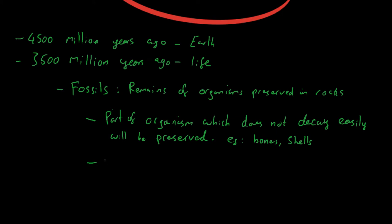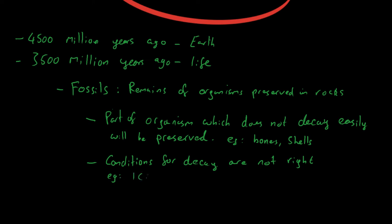Another reason for a fossil forming could be that there are conditions which cause decay to be really slow or not happen at all. Decay occurs in warm, moist conditions. If you have an organism frozen in ice, then those conditions are not warm or moist, so it's going to take way, way longer for an organism to decay, or it just won't decay at all. Examples include ice, or underground conditions — maybe there's a lack of oxygen, a lack of moisture, or it's too hot — and so decay is not going to happen.